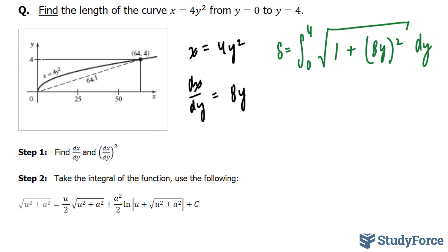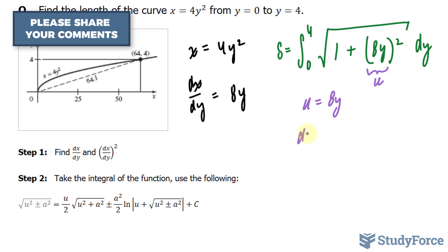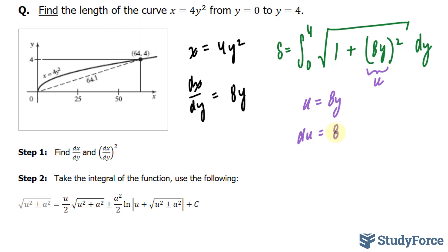Now that we have set up the equation, I can do a u substitution, where I set u is equal to 8y. I'm setting only this equal to u. Let's take the derivative of this equation with respect to y. We get du is equal to 8 dy. Solving for dy, I get dy is equal to du over 8.